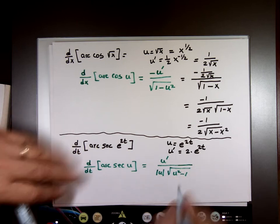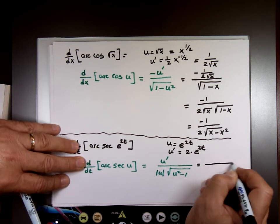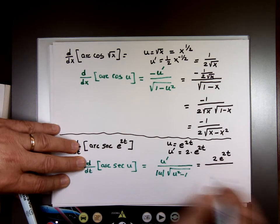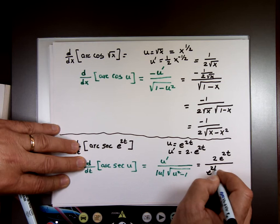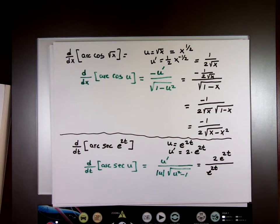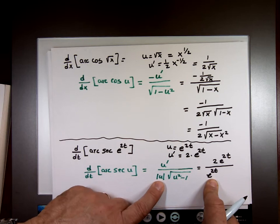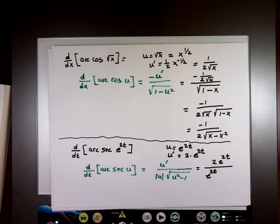So let's fill in the blank. 2e to the 2t. e to the 2t. Notice I didn't use an absolute value. Why not? Because this value is always a plus, and the absolute value of a positive number is the number itself. So this is always positive. I don't need the absolute value for that.